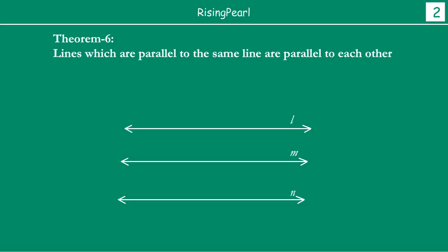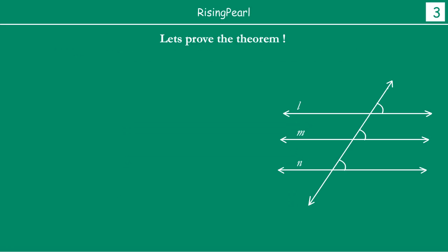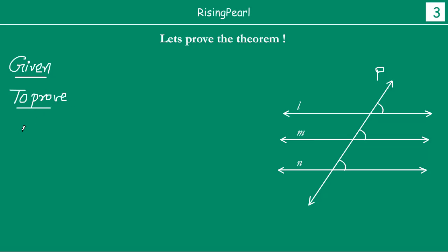Now let's actually get to the proof of this. How do we prove this? When we actually do these proofs for theorems, we start to write what is given, and then we want to write what is to be proved, and then the actual proof.